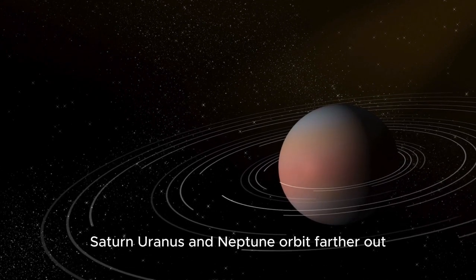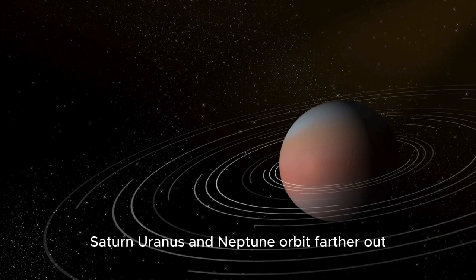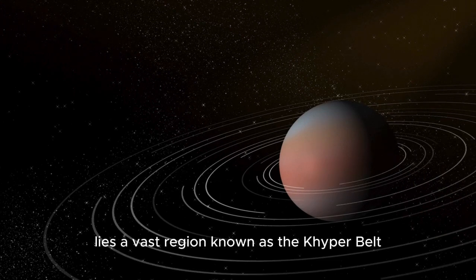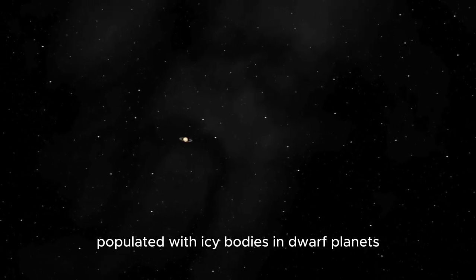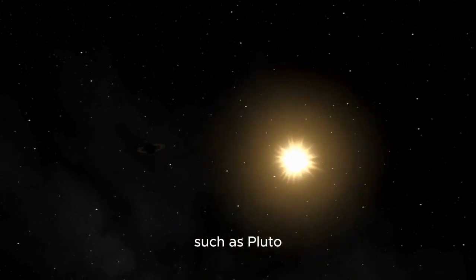Beyond Neptune lies a vast region known as the Kuiper Belt, populated with icy bodies and dwarf planets, such as Pluto.